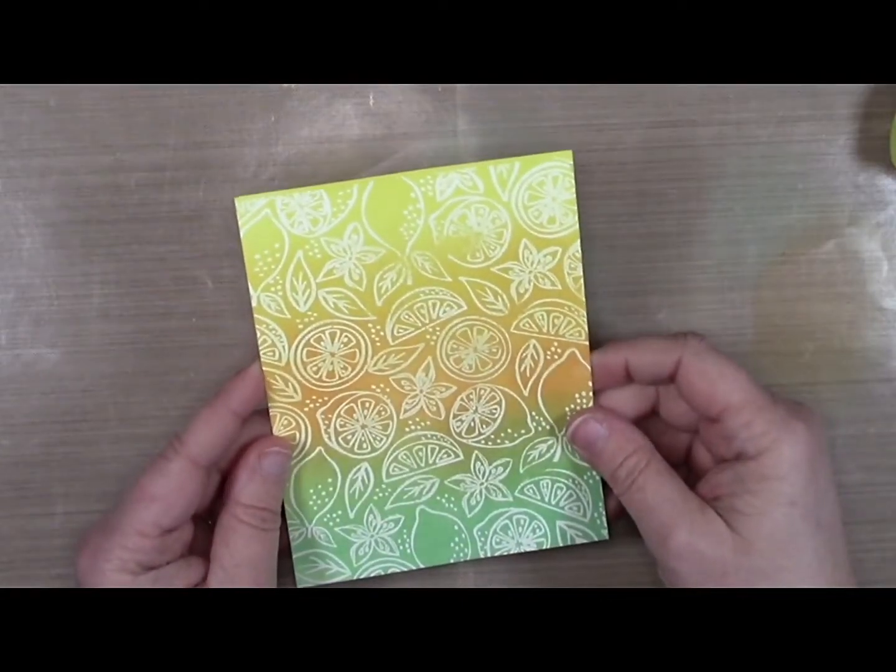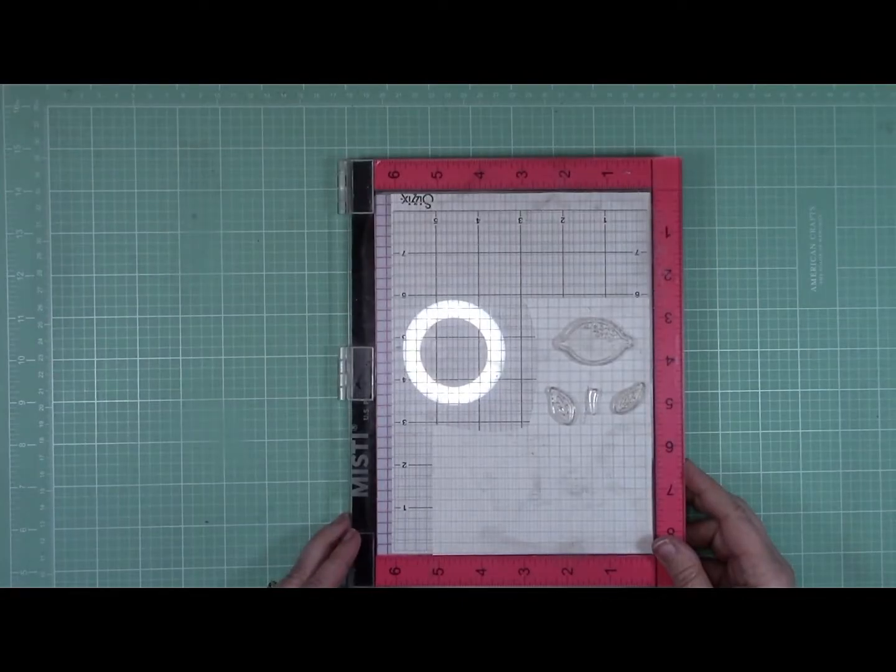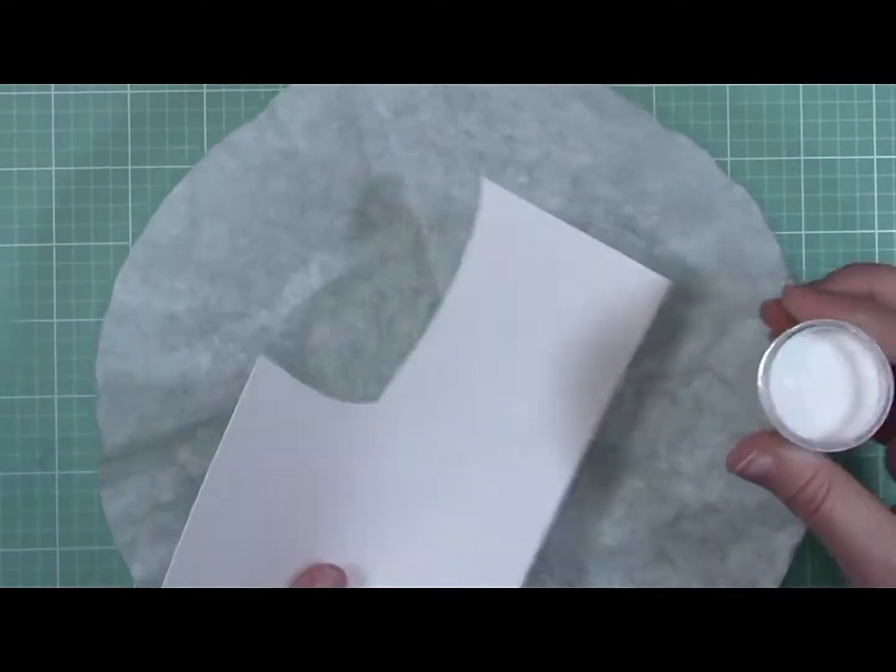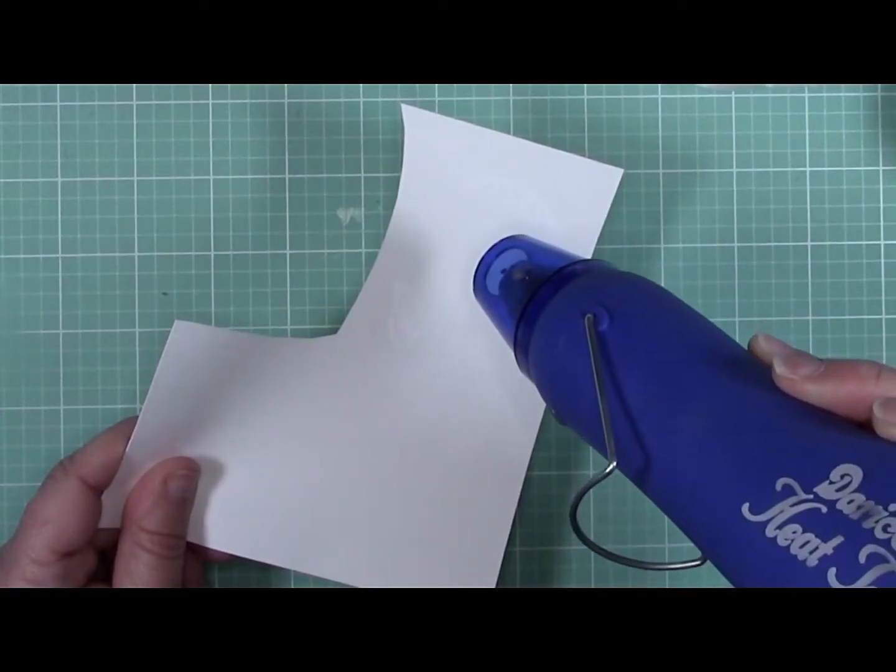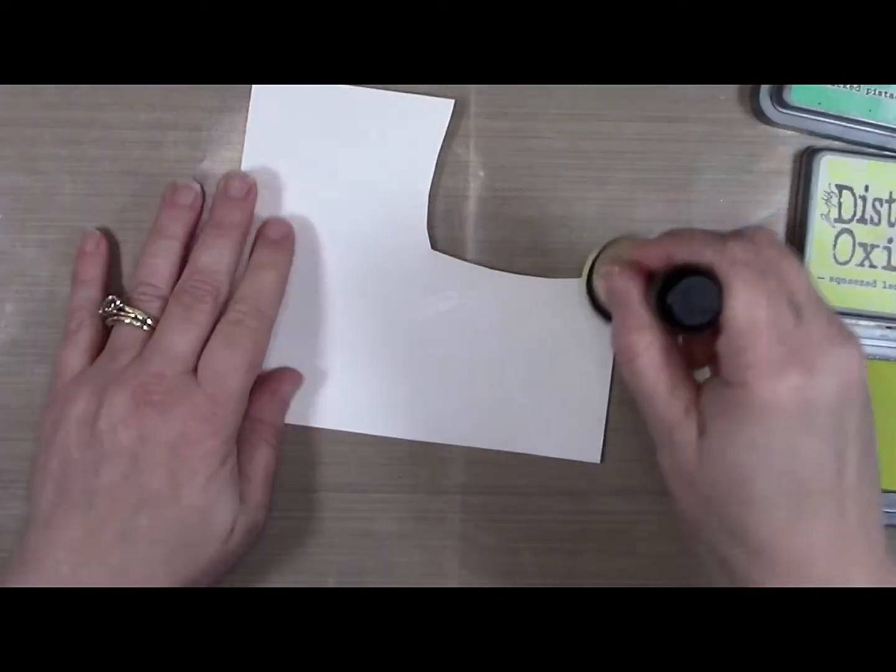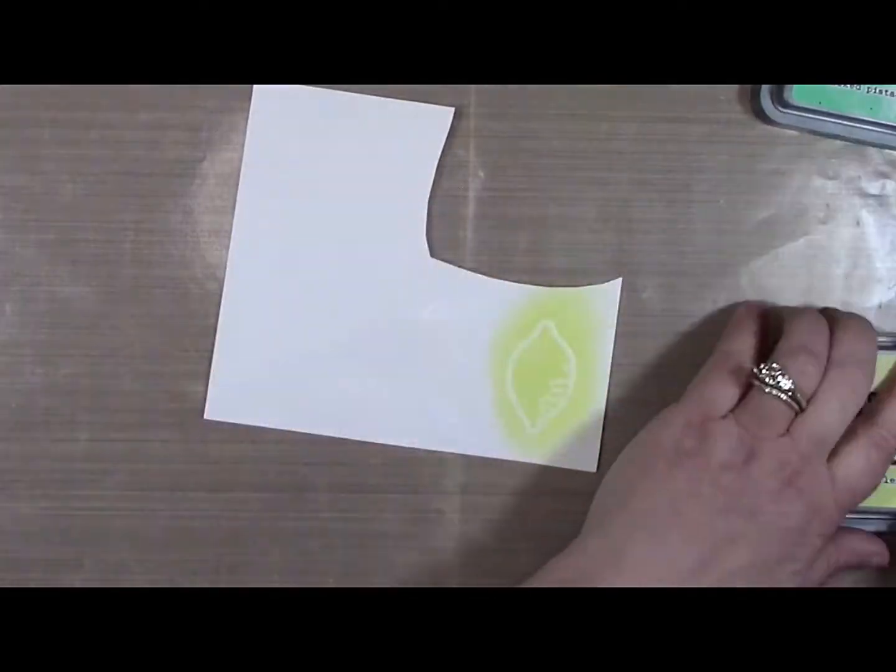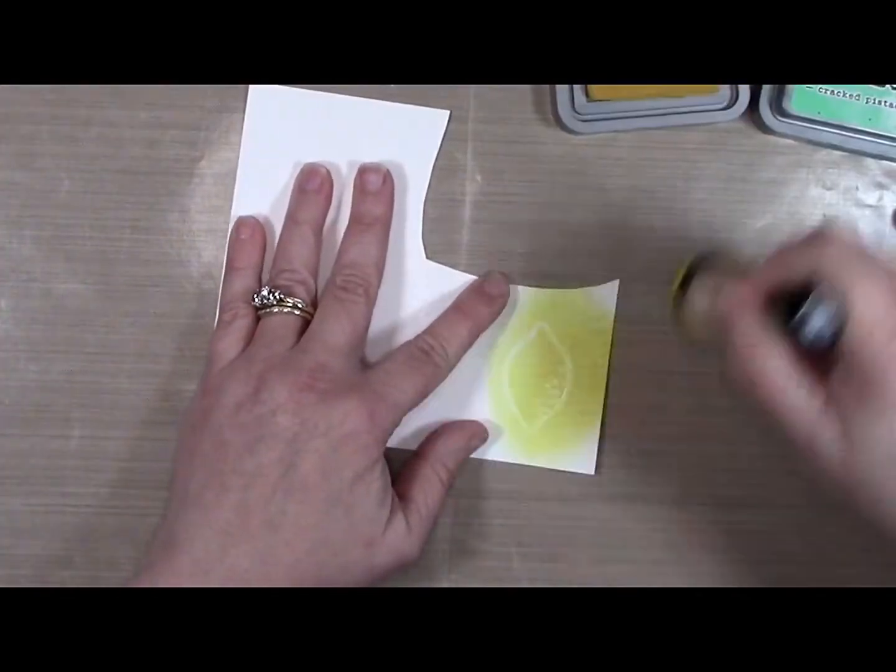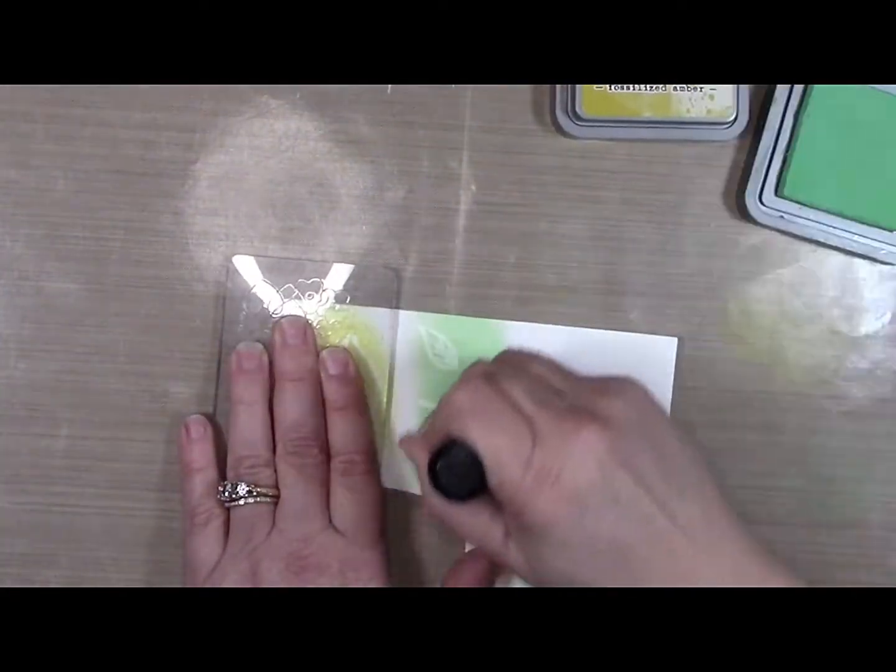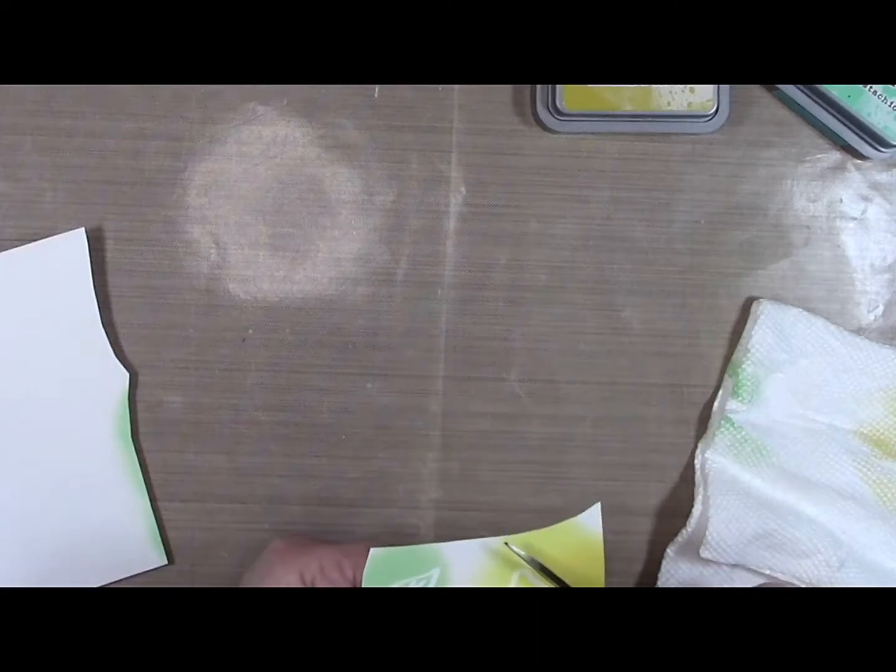I'm going to next work on the lemon, the stem, and the leaves. Same kind of process—I'm going to heat emboss that and then I will begin to color it. So here I go with my yellow. I'm going to use the Squeezed Lemonade and some Fossilized Amber to darken one side of it a little bit and wipe off the excess.